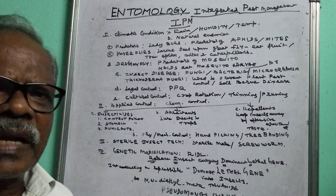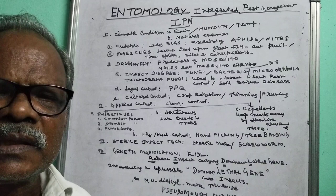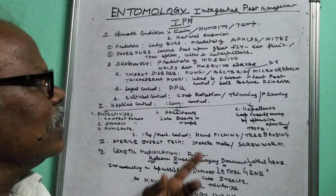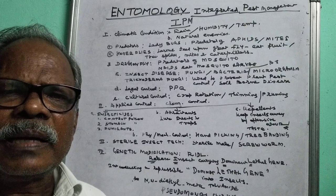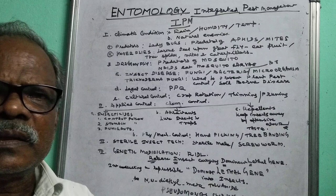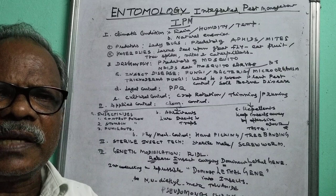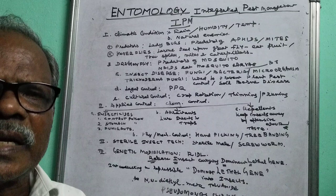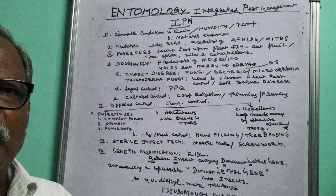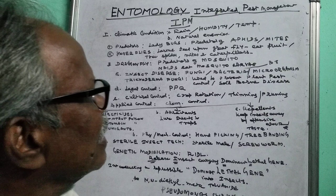First, we will see the climatic condition. Rainfall naturally controls the insects — whenever heavy rain occurs, the insects naturally die. Whenever humidity is less, natural control will be there, while during high humidity, insect proliferation will be more. Temperature also has an adverse effect on insects. 16 to 32 degrees Celsius is the favorable temperature for insect development, but below 16 and above 32 degrees centigrade, the insect will be under control.